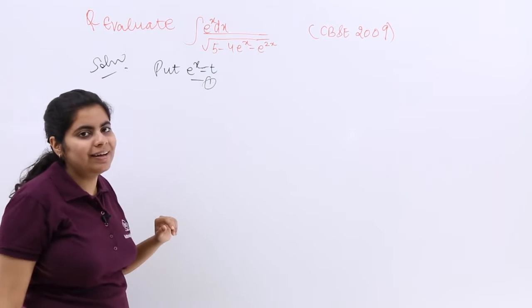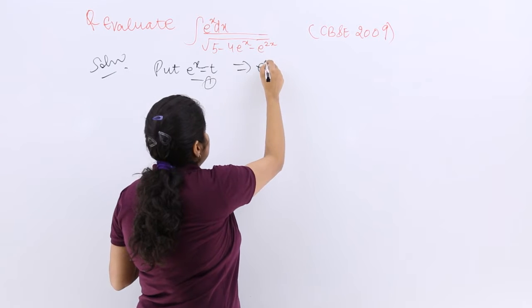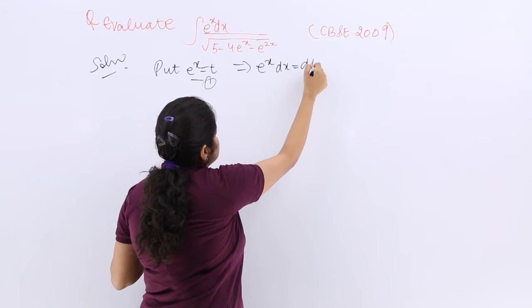So this makes me as equation number 1 and then I have differentiating both sides e raised to the power x dx is equal to dt.